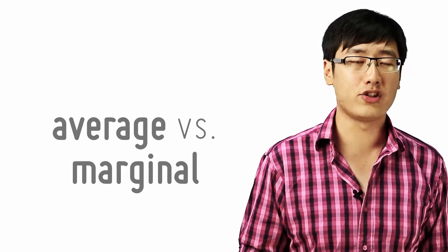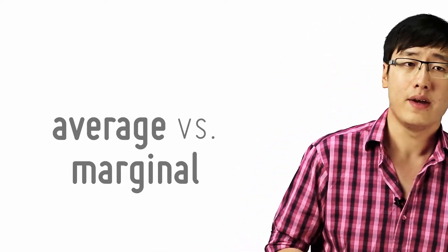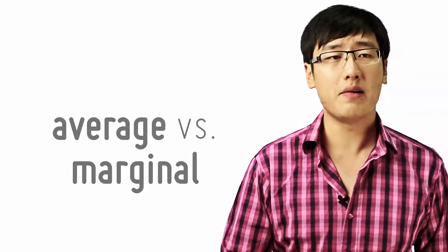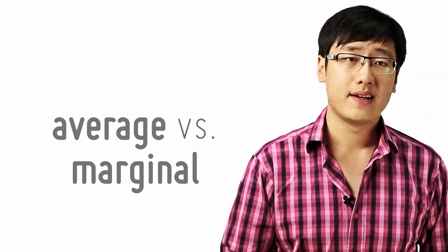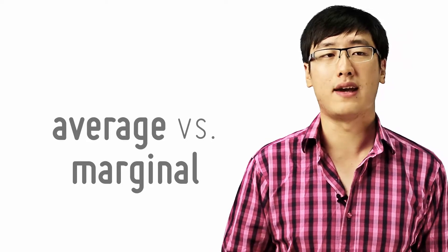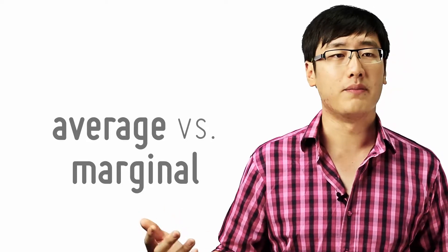We have just encountered our first relationship between average and marginal. This is a recurring concept that will occur many times in economics, and there are some general rules we can explore. There are only three of them.